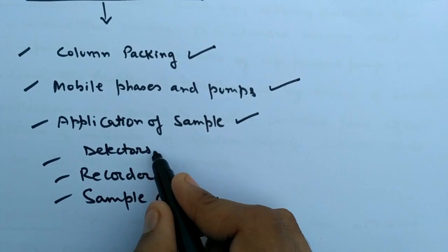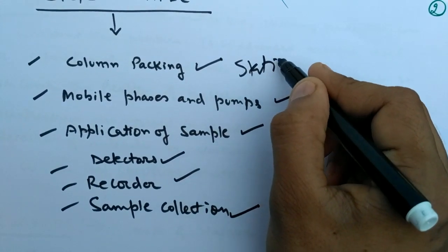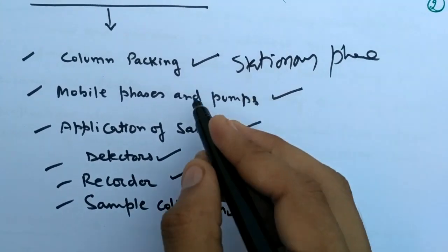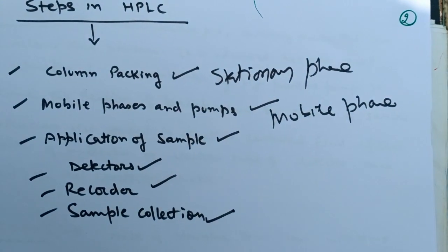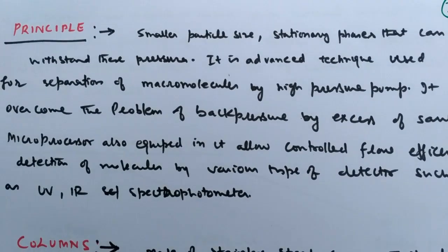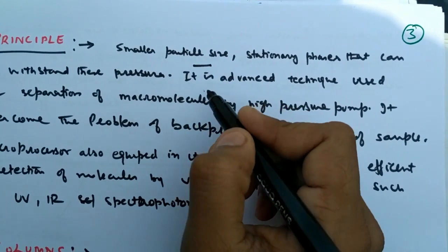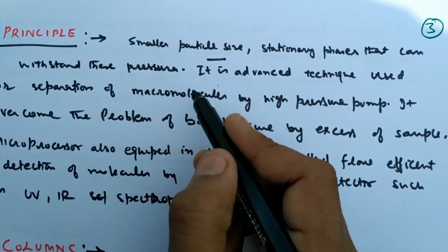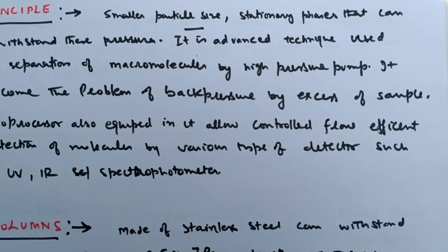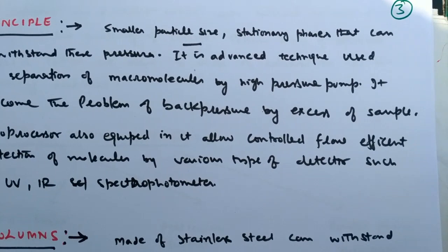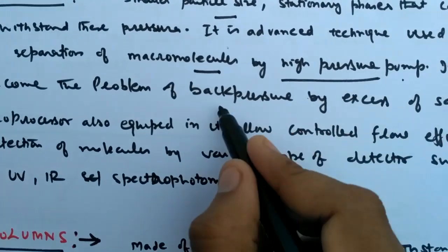The steps in HPLC include column packing, mobile phase and pump, application of sample, detector, recorder, and sample collector. The column is related to the stationary phase, and the solvent and solute form the mobile phase. Stationary phase and mobile phase are very important considerations in chromatographic analysis. The particle size of the stationary phase embedded in the column matters, and the pressure applied through the pump increases the flow.